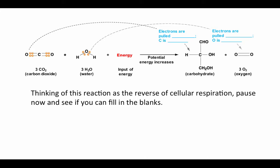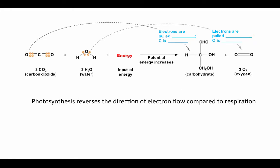Welcome back. Photosynthesis reverses the direction of electron flow compared to respiration. In respiration, the carbons and hydrogens in the carbohydrate were oxidized — carbon had less of a share of these electrons. So in this reverse reaction, carbon dioxide is going to be reduced to carbohydrate — those carbons go from having a lesser share of electrons to having equal shares in the carbon-hydrogen and carbon-carbon bonds. The electrons are pulled more toward carbon, and carbon is reduced.